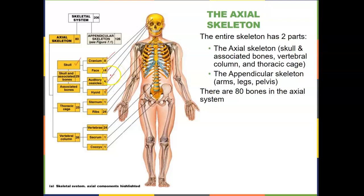The auditory ossicles we will review in better detail when we talk about the auditory system. You need to know that they're there — there are three on the left and three on the right: malleus, incus, stapes. We'll focus on that more later. The hyoid bone is a facial bone associated with your throat.